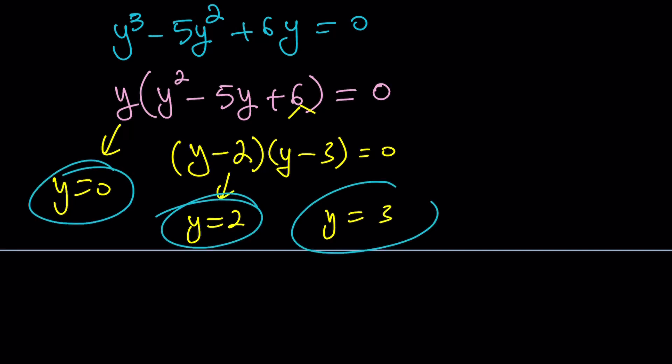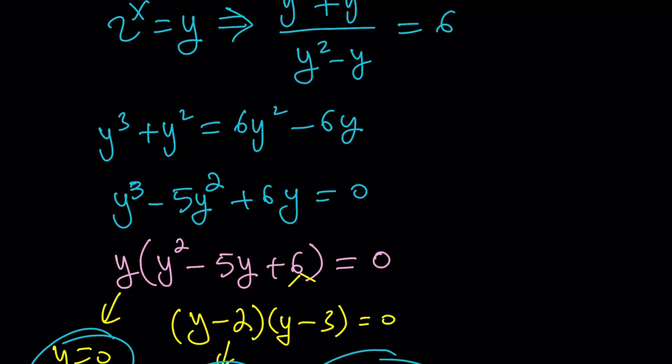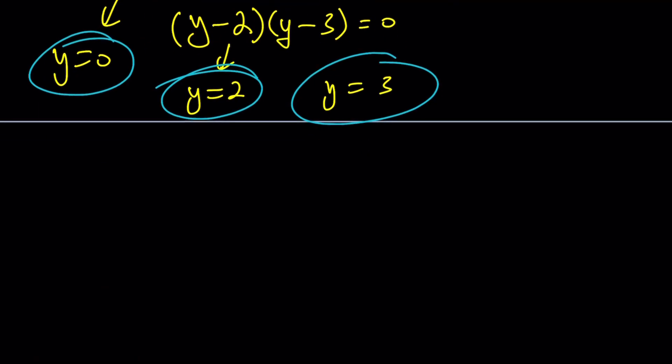And obviously, from here, by setting these equal to 0, you get y equals 2 and y equals 3. So it looks like we've got three solutions, right? So far. Let's find out. Now, we have to back substitute. What is y? Y is 2 to the power of x.